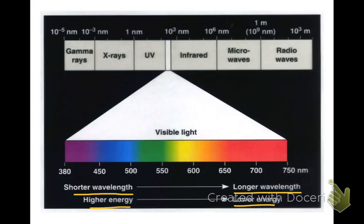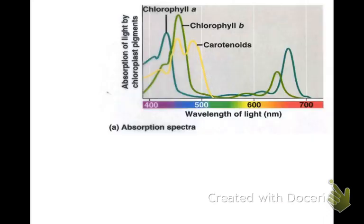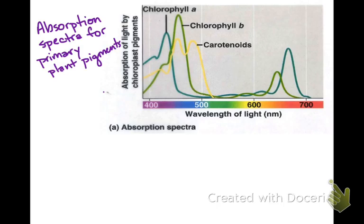A common way to show the absorption of a pigment is an absorption spectrum. You can see here the various chlorophyll molecules and carotenoids, the various pigments found in a plant. Chlorophyll A and B do not absorb a lot of green light wavelengths, and that is why plants reflect back green color.